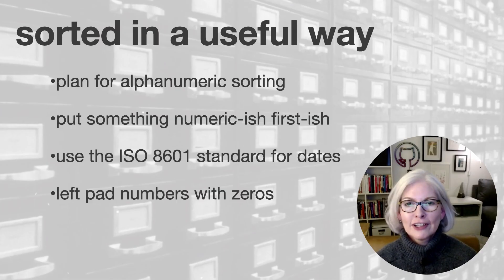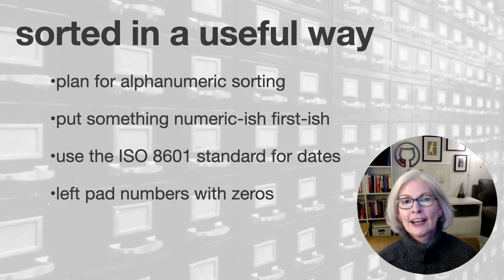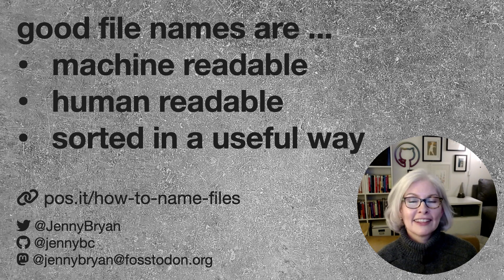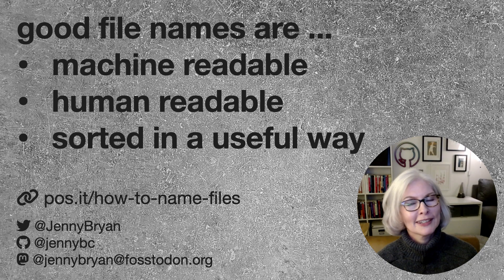By default you know you're going to see your files in alphanumeric order. You should just resign yourself to that and plan accordingly. So we want to see dates or a left padded number at the beginning followed by a highly informative slug. I hope this helps you develop a file naming scheme that works for you. These slides and some other resources are available at the short link you see here, and I look forward to seeing more of you on Twitter, GitHub, or Mastodon. Thanks and bye bye.